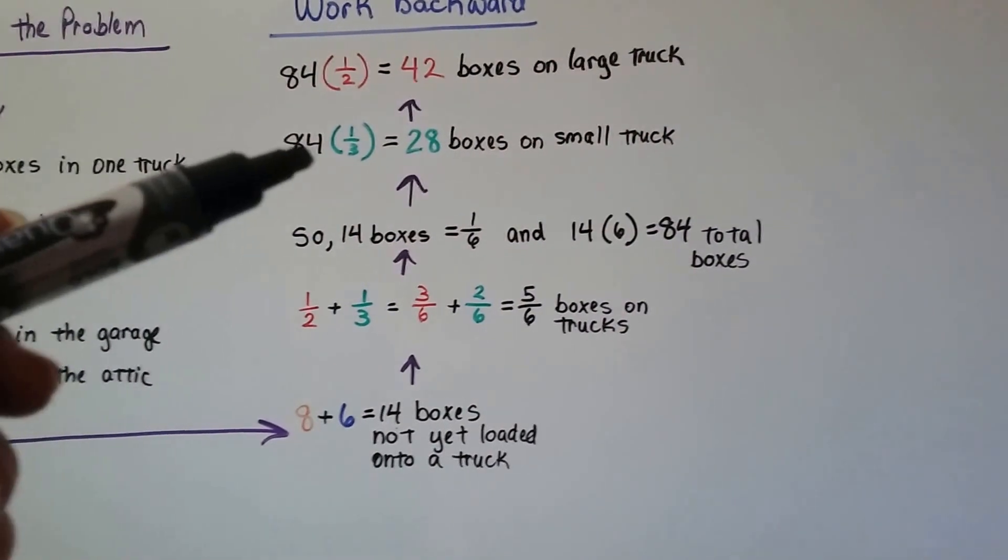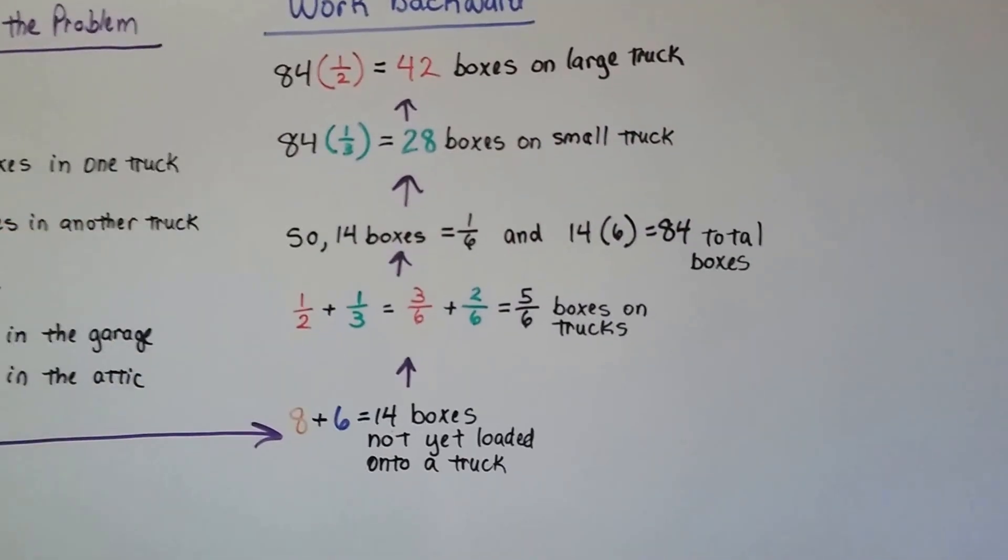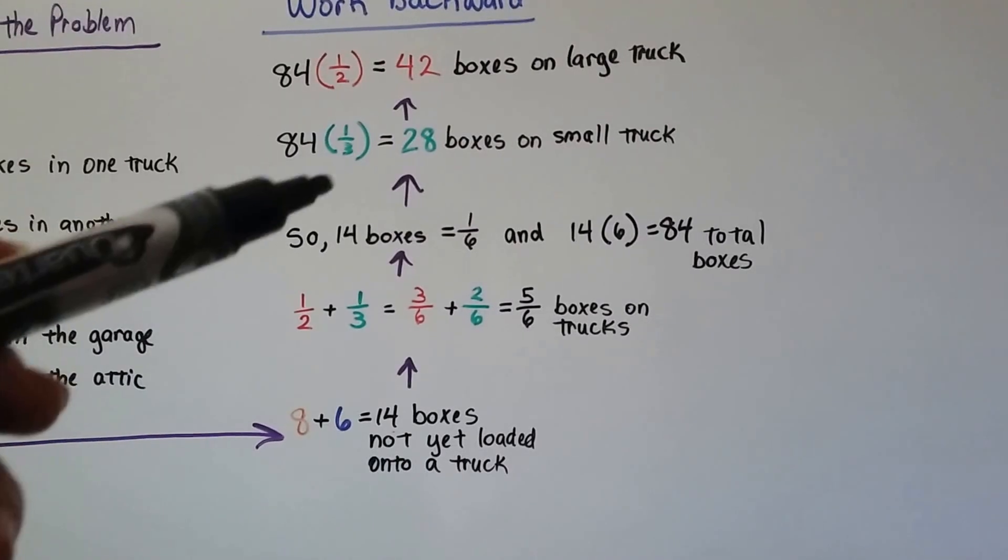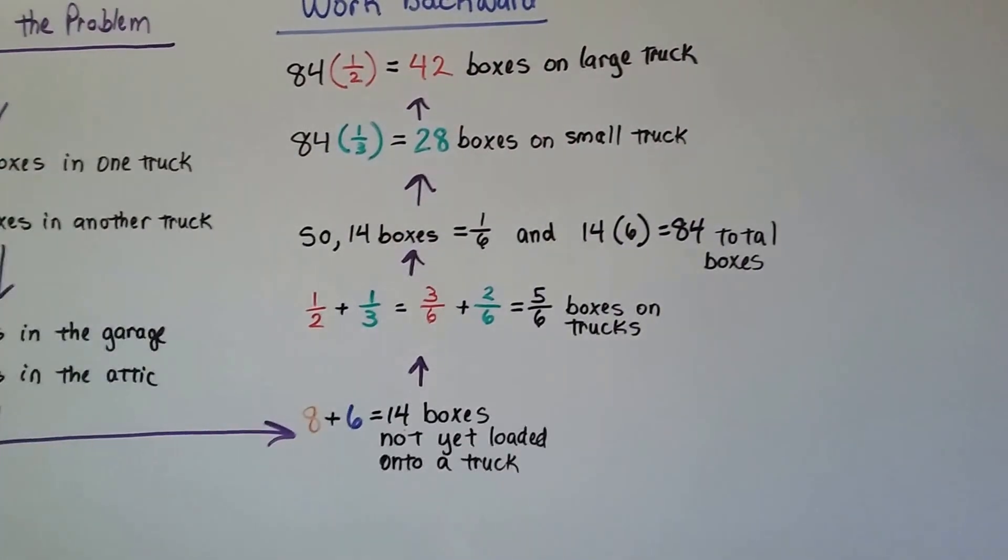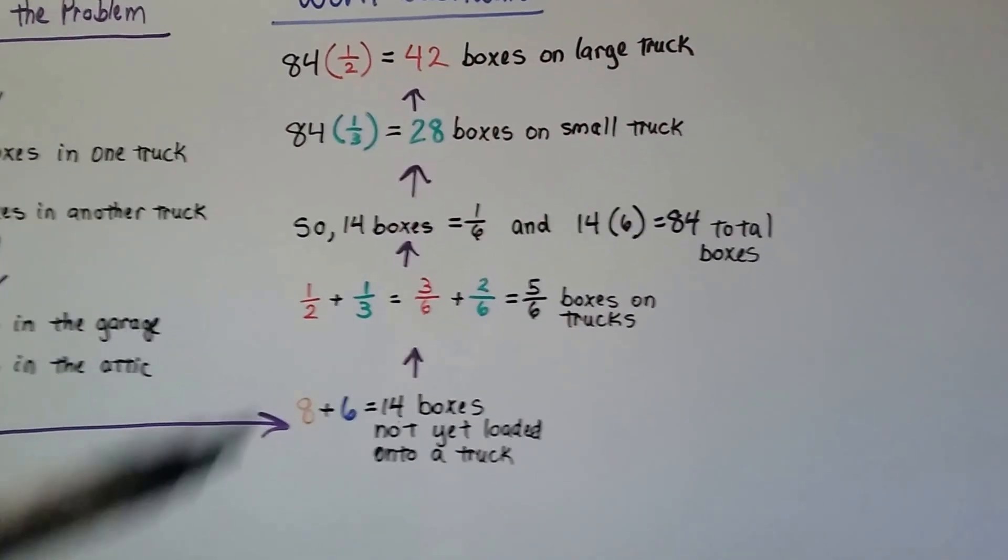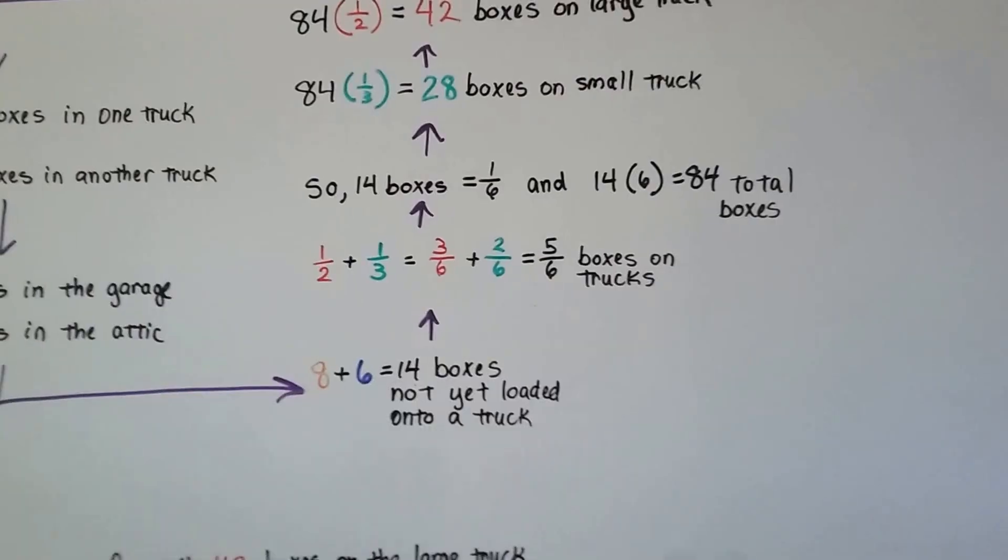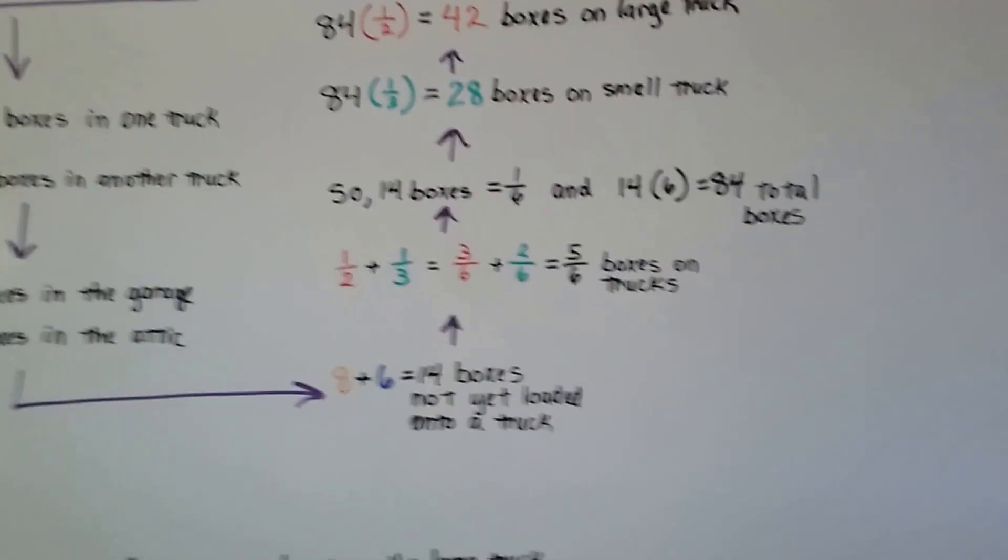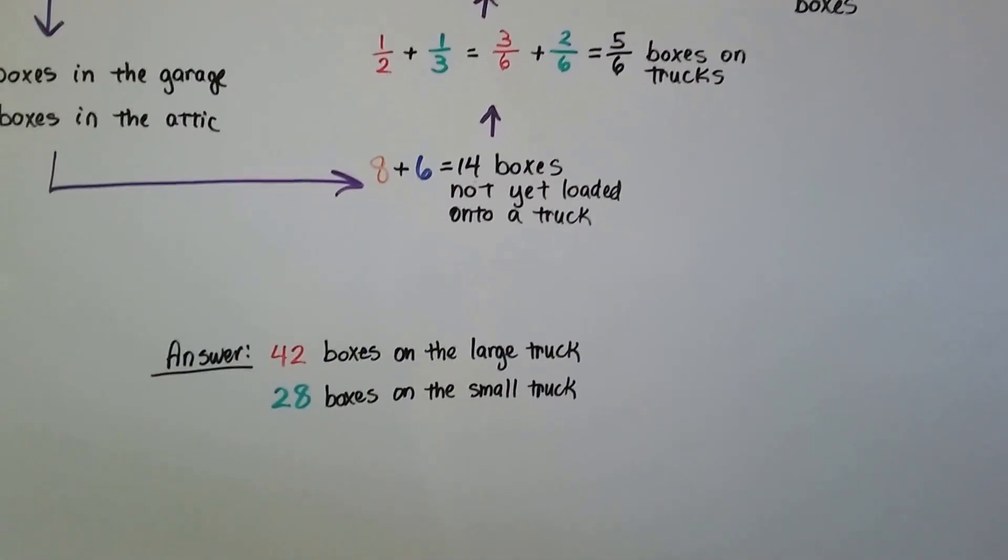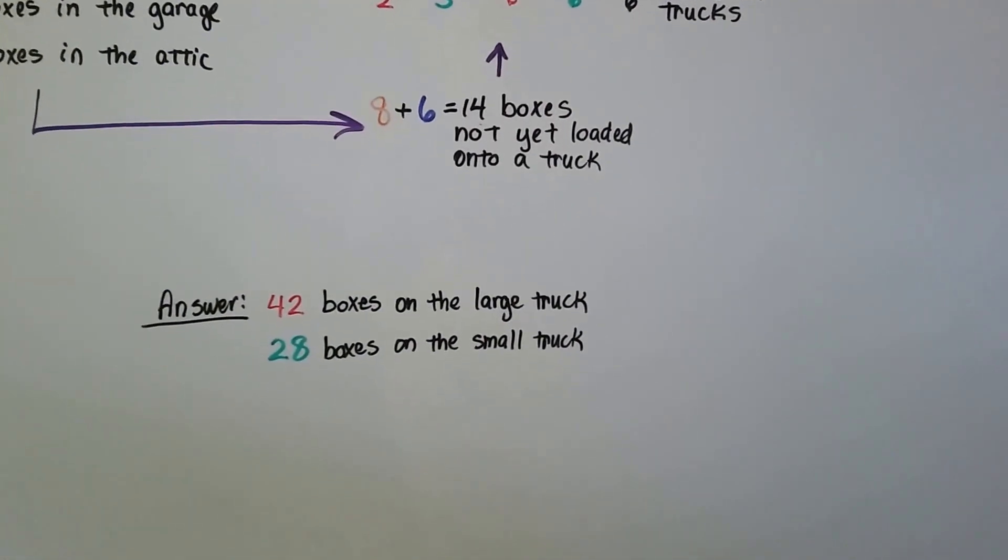And if one-third of them are on the small truck, 84 times a third equals 28. And if half of them are on the large truck, 84 times a half is 42. If we want to check our work, all we have to do is add the 42, 28, and 14 and see if it equals 84, and it does. So we know 42 boxes are on the large truck and 28 are on the small truck.